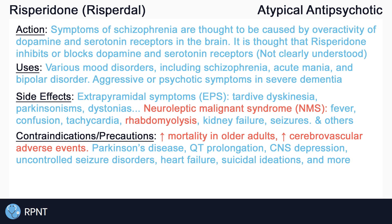It is most important to be aware of the black box warning of Risperidone, which is that Risperidone may be associated with increased mortality in older adults with dementia-related psychosis. Risperidone may also increase the risk of cerebrovascular adverse events, such as strokes or TIAs, in geriatric clients. Avoid use in clients with Parkinson's disease, as Risperidone inhibits dopamine receptors and may worsen Parkinson's symptoms.